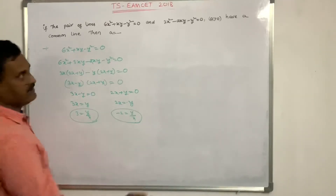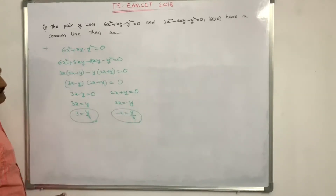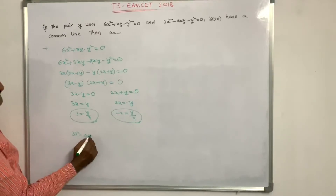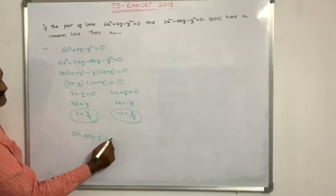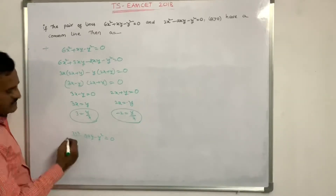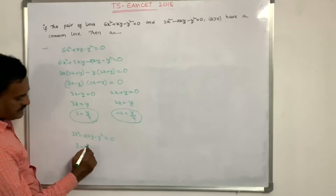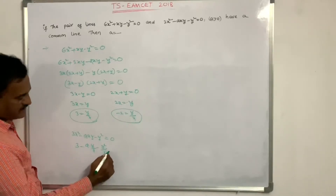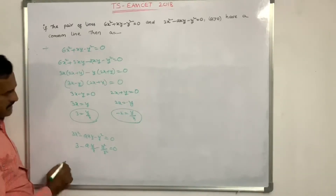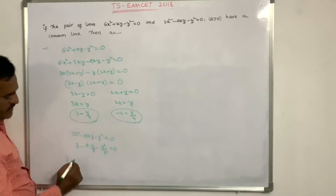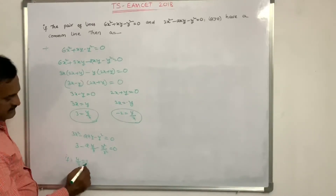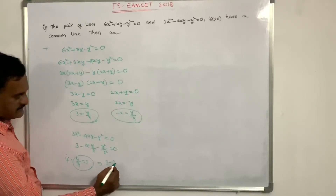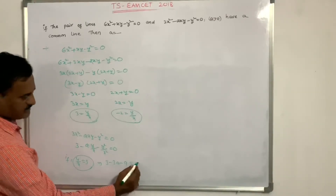Substituting into 3x²−Axy−y²=0, divide by x²: 3 − A(y/x) − (y/x)² = 0. First, try y/x = 3: 3 − 3A − 9 = 0.